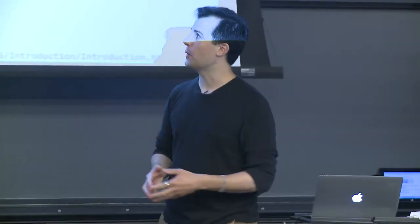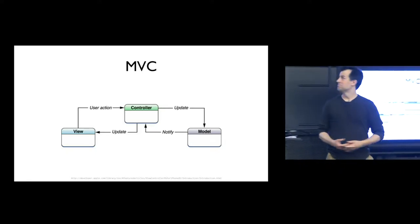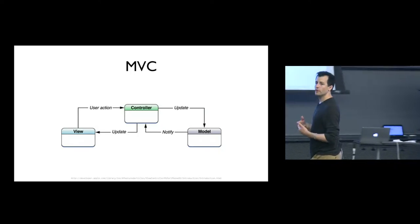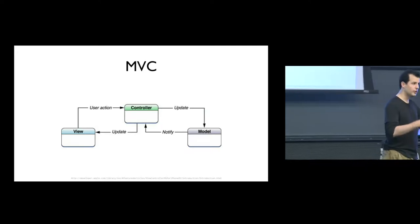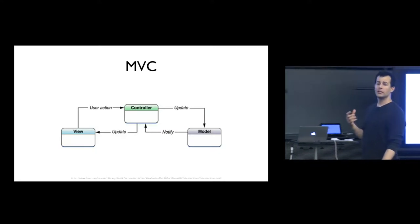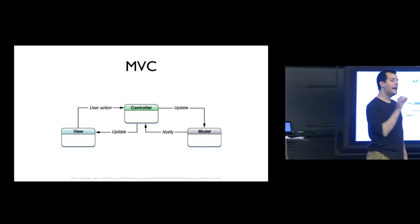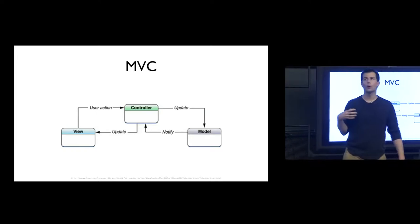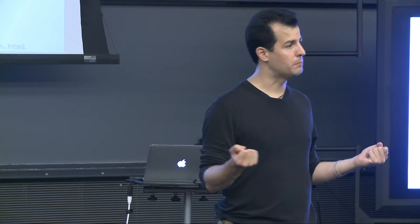iOS adheres to a design paradigm generally known as MVC — Model, View, Controller. We won't spend much time on the Model today, but we will cover the Controller and View. The Controller is really the brains of your program — where you implement logic, respond to user interactions, and direct display. When it's time to display things on screen, you hand that off to the View. Data is stored in the Model; business logic lives in the Controller; the View takes it the last mile to the screen.